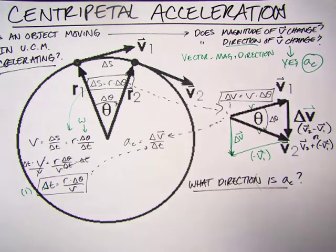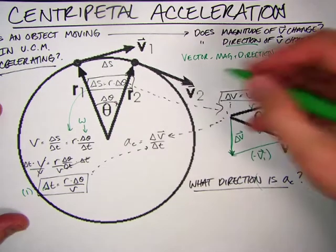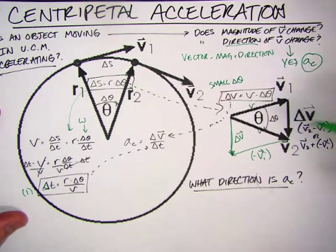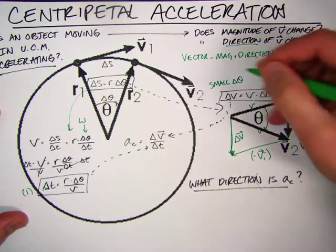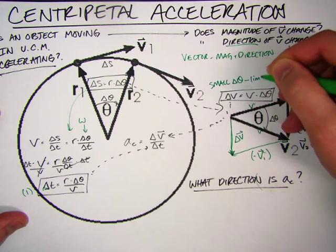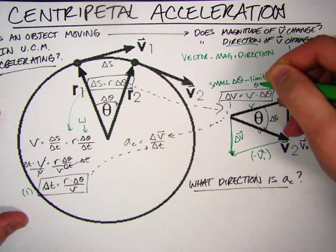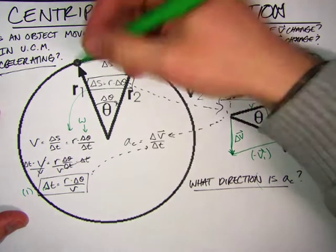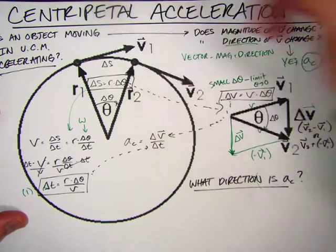So an expression for delta V, so this works for very small changes in angle, for very small delta theta, as delta theta, the limit, as this goes to zero.